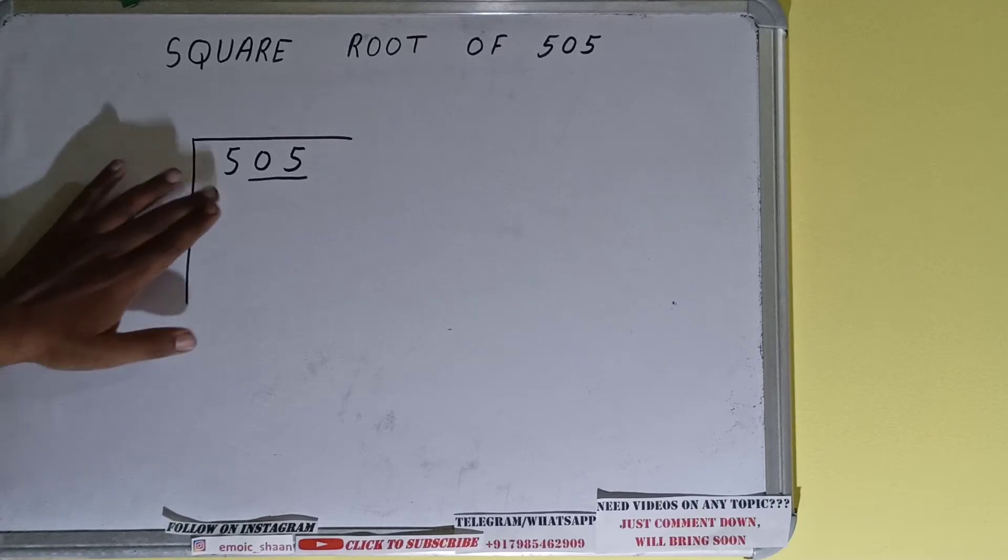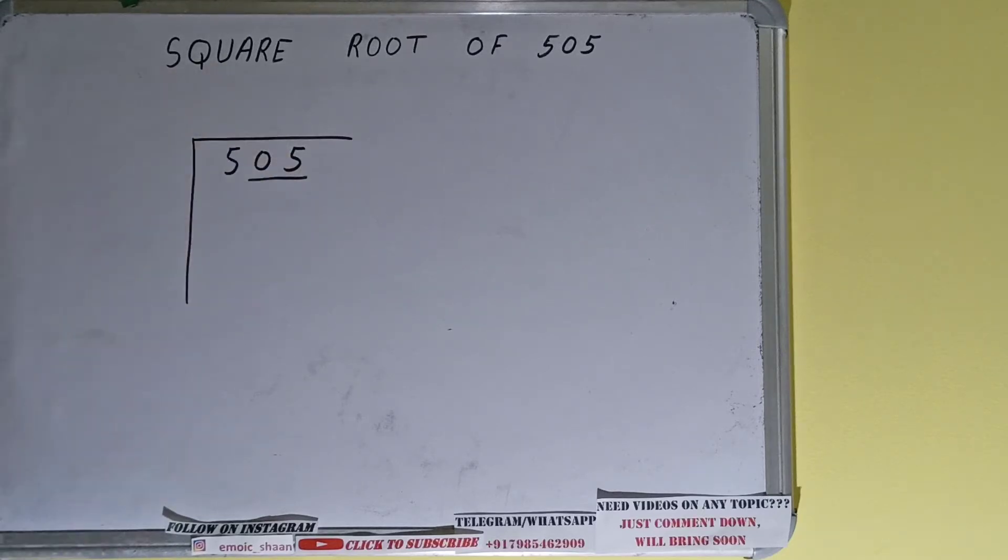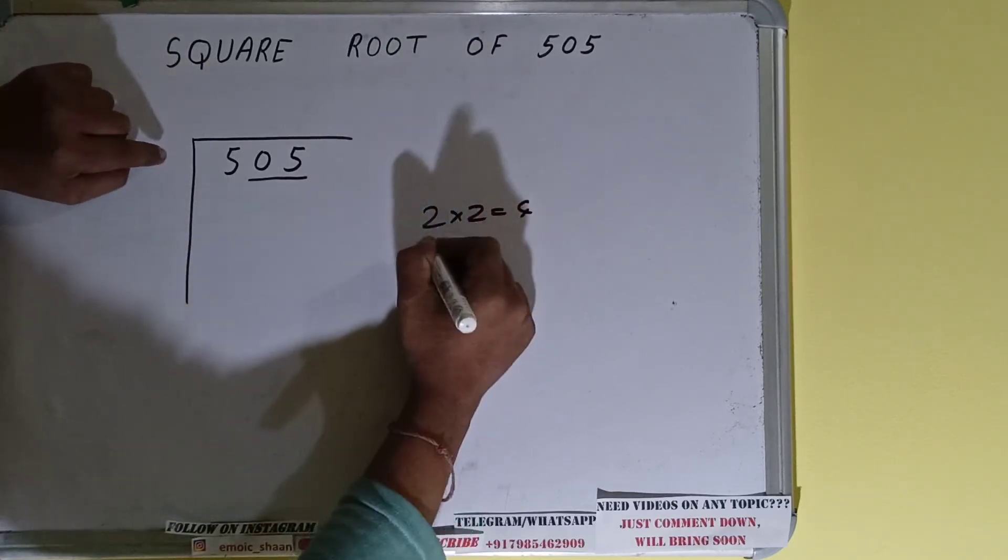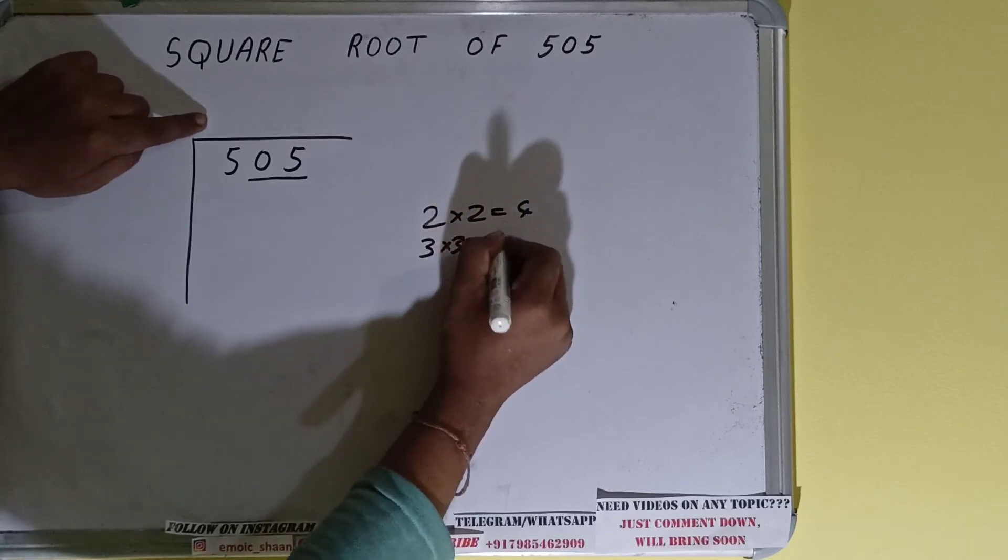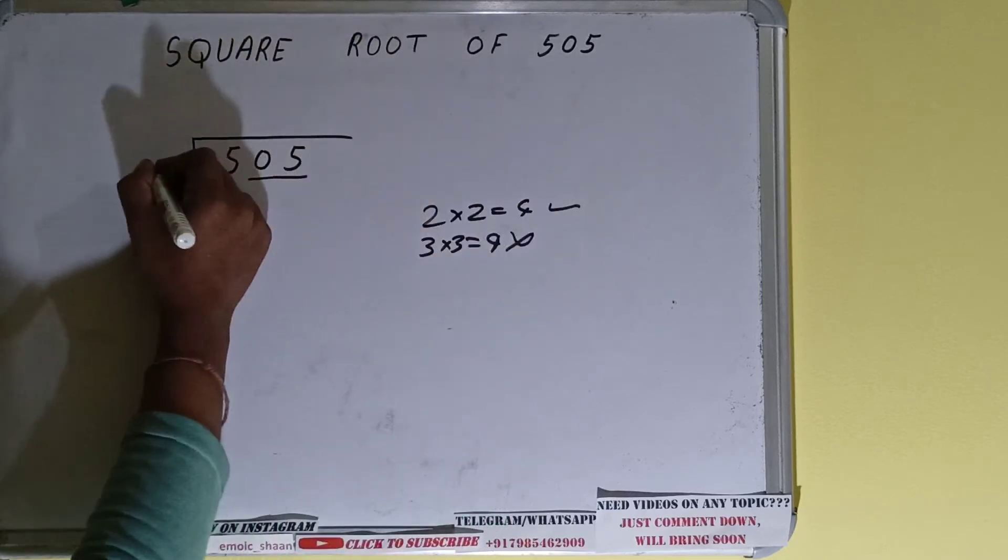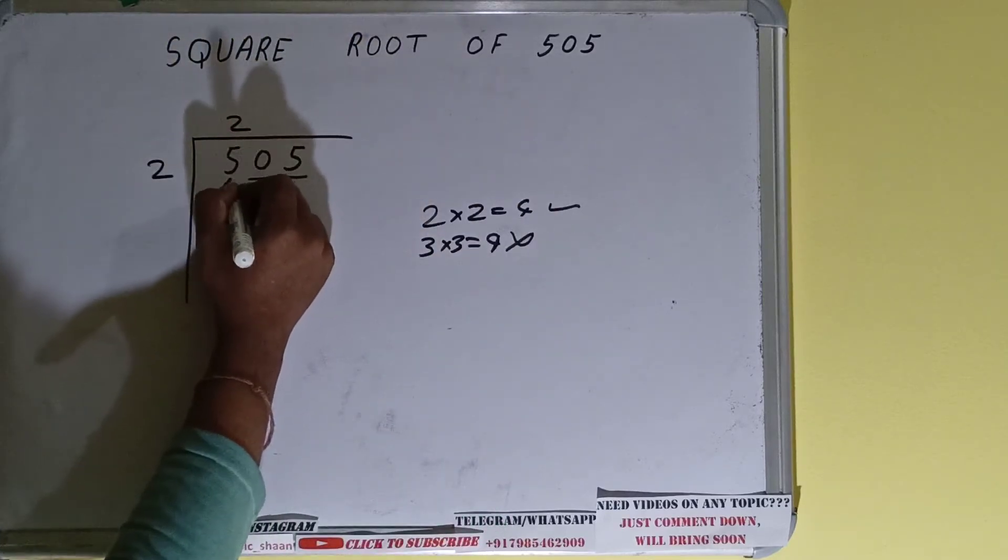So first we'll divide this five and then we'll bring down the pair. The rule is whatever number we write here we have to write here also. So if we write two here and two here it will give four, and if we write three here and three it will give nine. Nine we cannot use because it is greater than five, so we have to use this four. So two here and two here will give four.